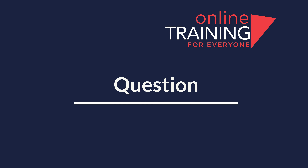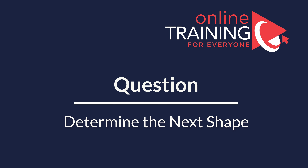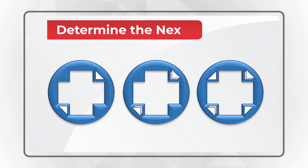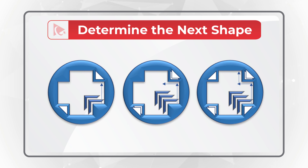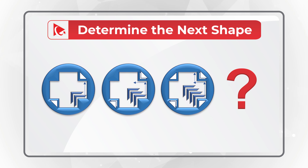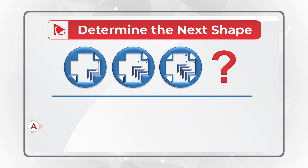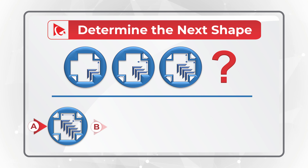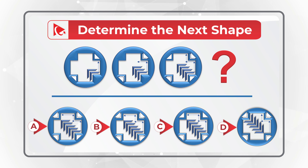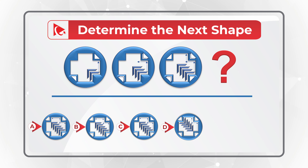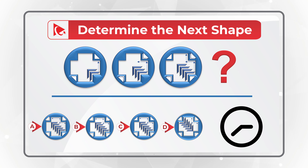Now I have a question for you to test your skills. You are presented with a series of objects and you need to determine the next object in the sequence. Please choose one of the four choices: A, B, C, or D. Post your version in comments — this would allow me to give you my feedback. Thanks for participating and good luck!